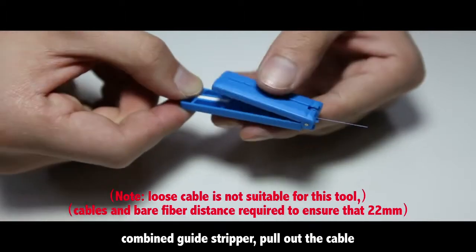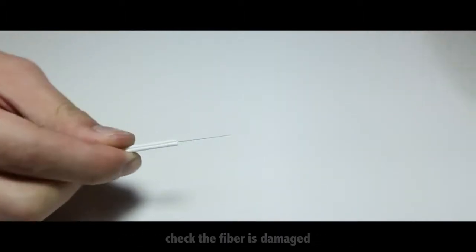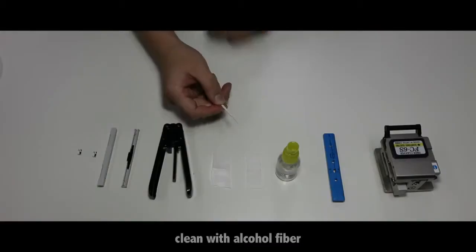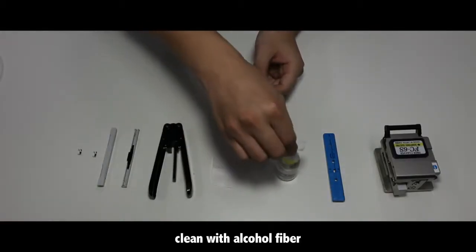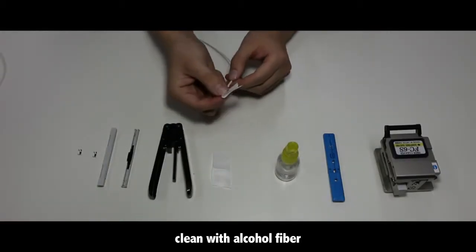Combine the guide stripper and pull out the cable. Check the fiber for damage, then clean the fiber with alcohol.